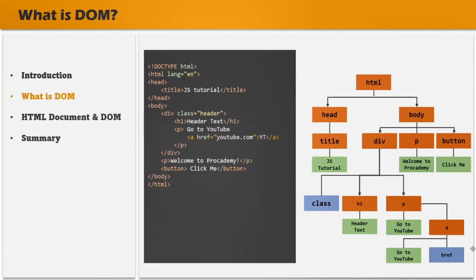The DOM not only stores the HTML elements, but it also stores other things like text, comments, etc. So if you have any comments in your HTML code, then for that comment also a node will be created in the DOM tree structure. Because the rule is: whatever you have in the HTML document, it must be present in the DOM as well.